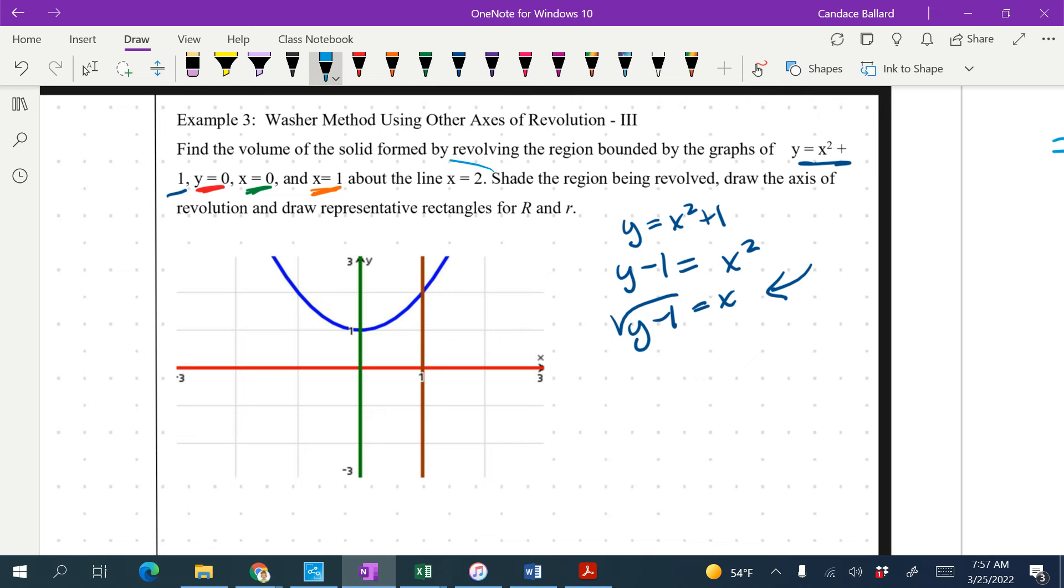We're revolving about the line x equals 2, which is here. So that's our axis of revolution. We know we're going in the y direction. That's why I solved this for y. This is the region that we're revolving, and we notice that it is not touching our axis of revolution, which is why we have a washer.